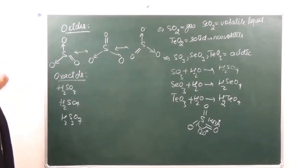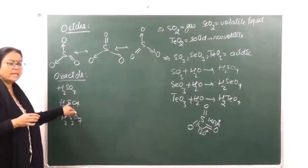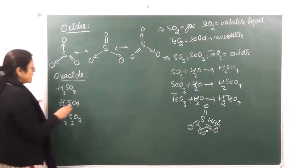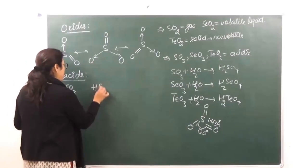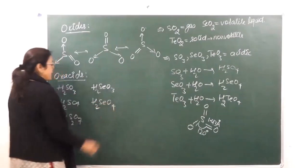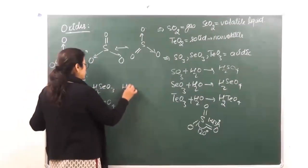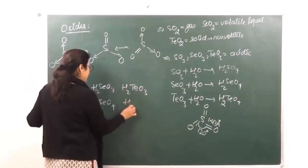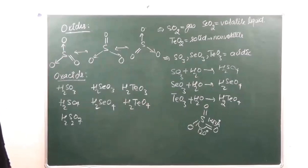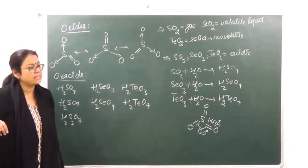The more common acids in the case of selenium and tellurium are selenious acid, selenic acid, and similarly tellurous acid and telluric acid. Selenium forms H2SeO4 — selenic acid — and telluric acid is H2TeO3 and H2TeO4. These are the common acids, but the oxa acids we will study in detail are those of sulfur.